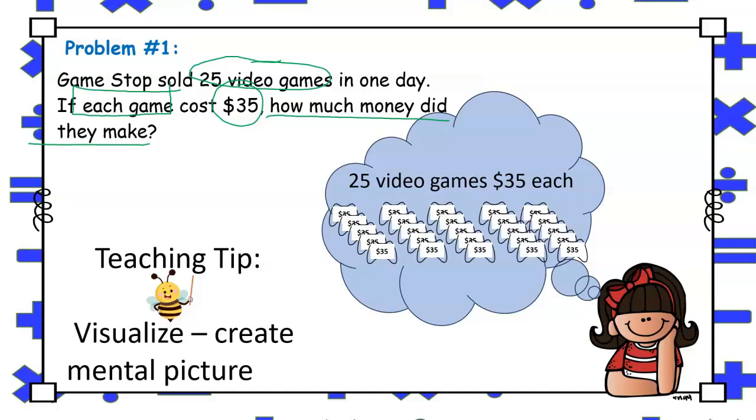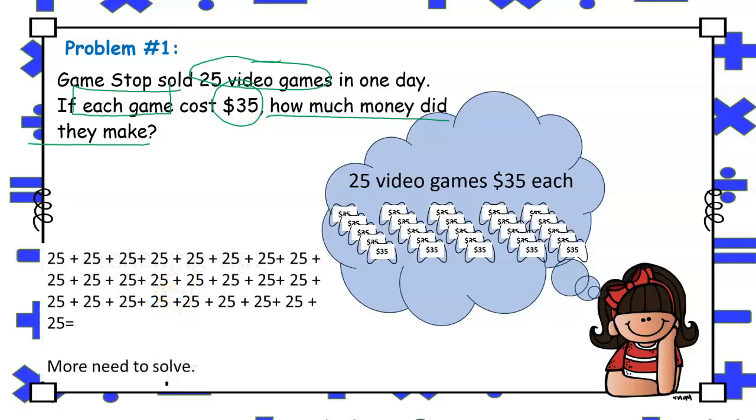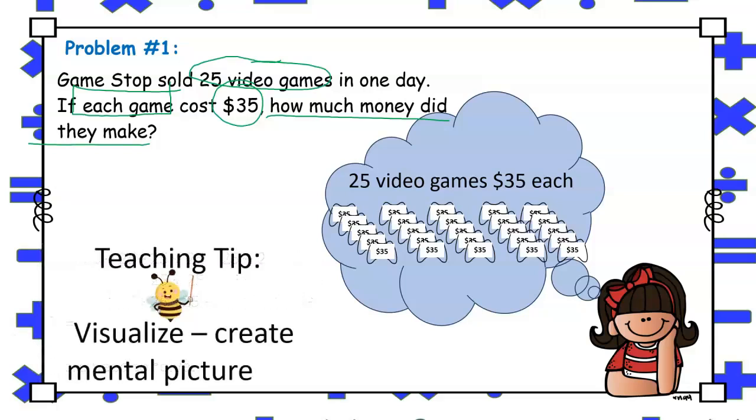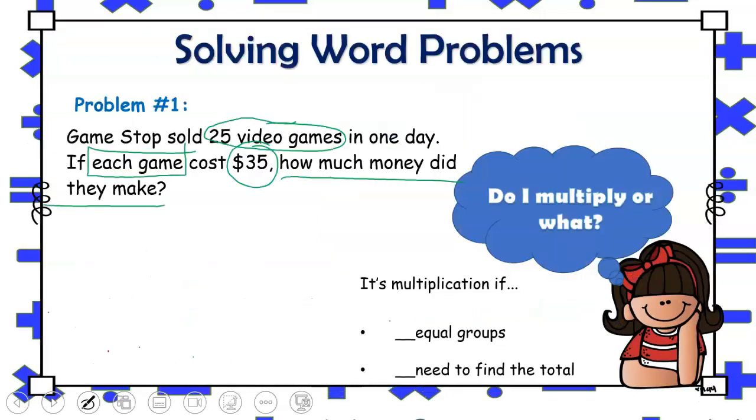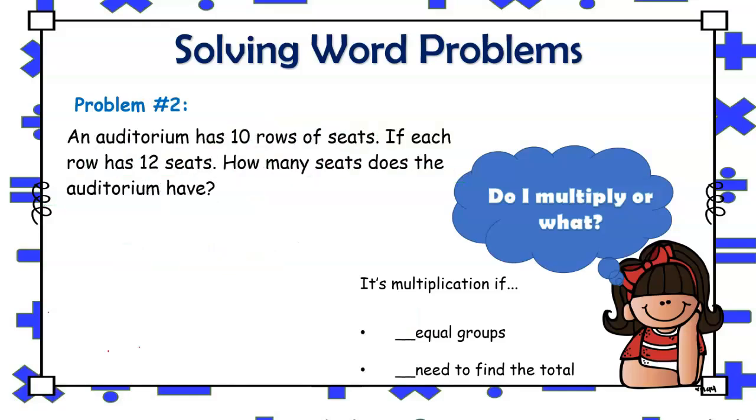We can add 35, 25 times. However, you want to help them understand that that would take a lot more time and to work more efficiently. Multiplication would be the best operation to use to solve for this problem. To recap, this is a multiplication word problem since it refers to equal groups using the expression each game costs $35 and also that we need to find the total to determine how much the store made. Let's try another problem.